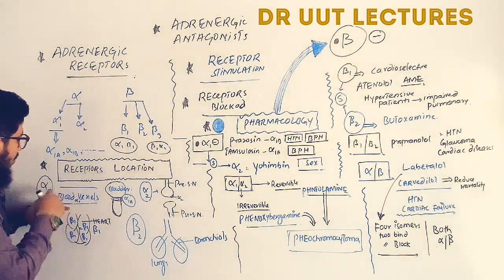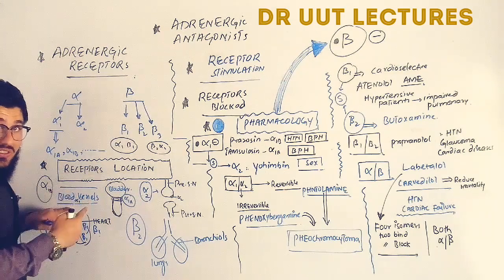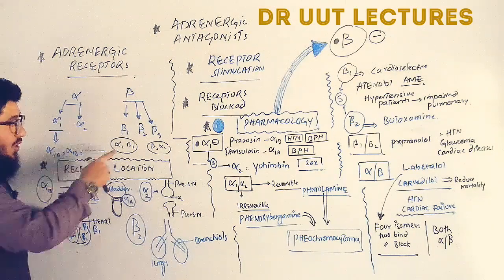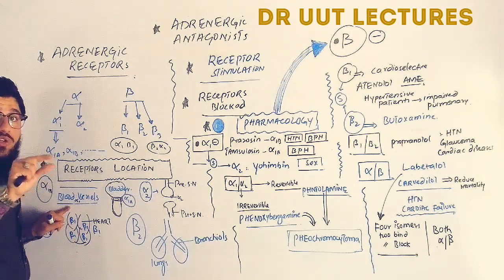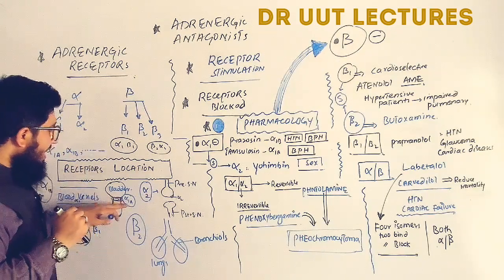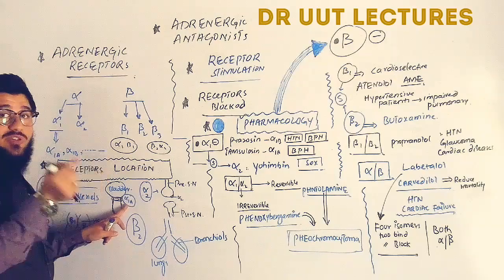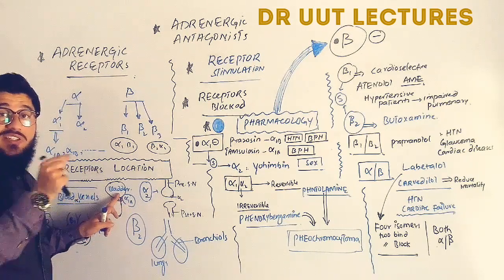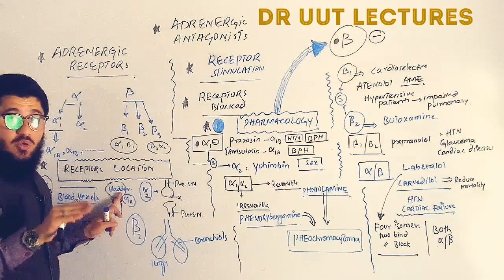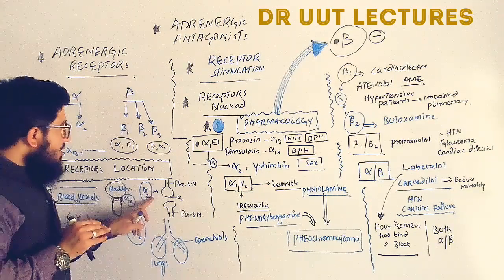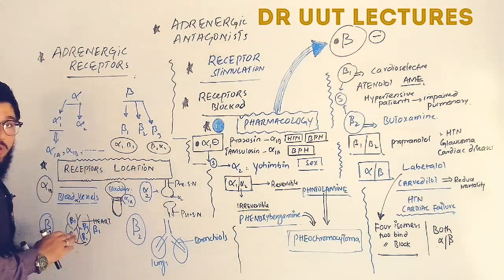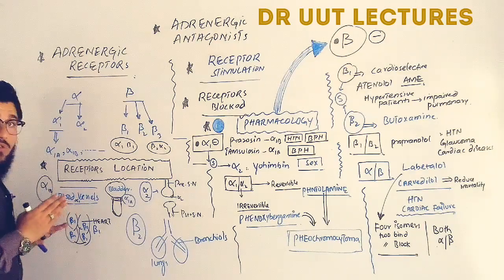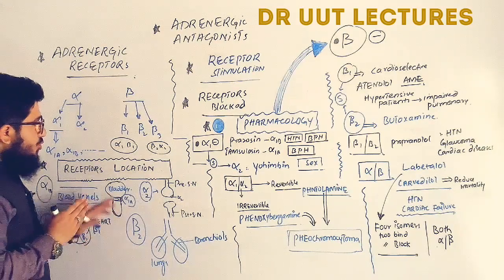If we stimulate alpha-1b receptors on the smooth muscles of blood vessels, it causes vasoconstriction, increasing blood pressure. For alpha-1a receptors, stimulation causes contraction of the sphincter, resulting in urinary retention. Stimulating beta-1 receptors on the heart increases cardiac function — cardiac output, heart rate, etc.